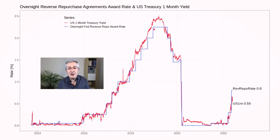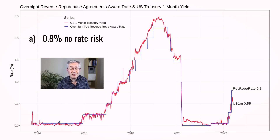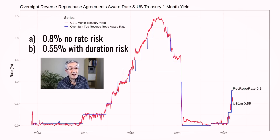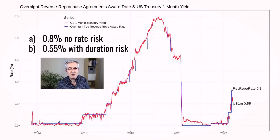Looking at the most recent rates, the reverse repo rate is 0.8% while the US one-month yield is about 0.55%. As manager of a money market fund you've got two choices: 0.8% with a reverse repo transaction with the Fed — no counterparty risk since the Fed has an unlimited balance sheet, and no interest rate risk — or a one-month Treasury paying 0.55% less with additional interest rate risk. The incentive clearly favors reverse repo, which is why so many money market funds are using that facility.